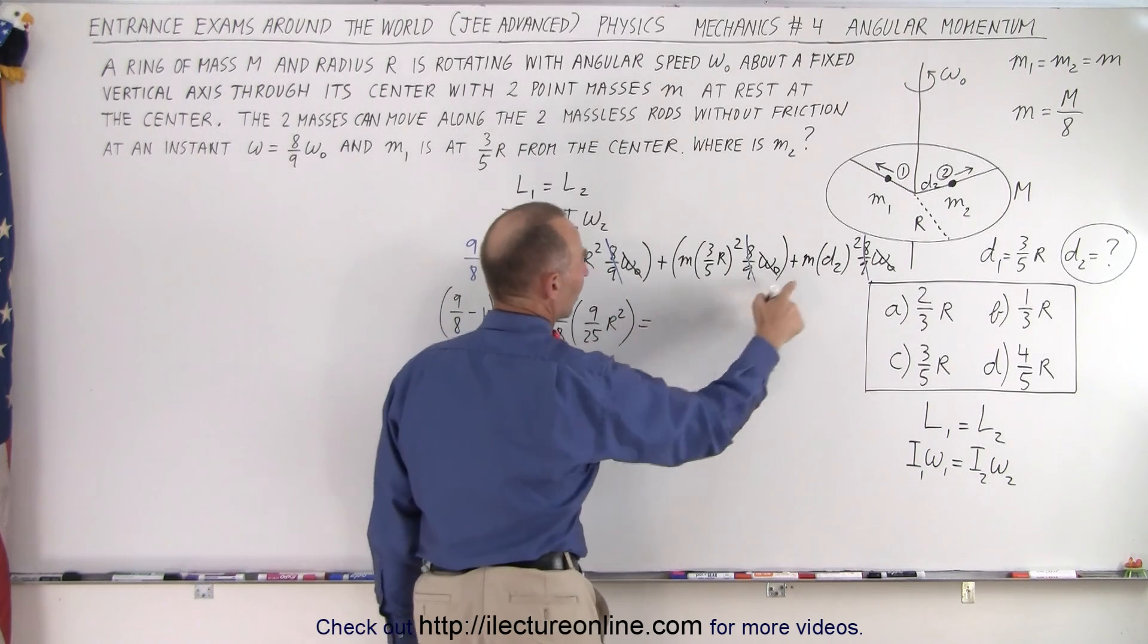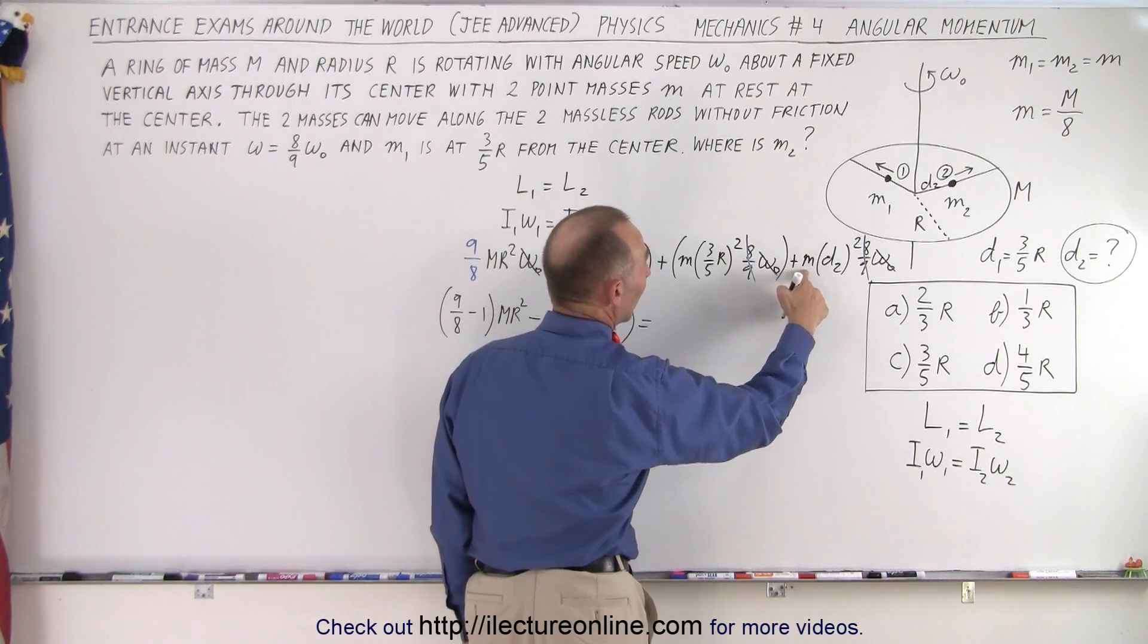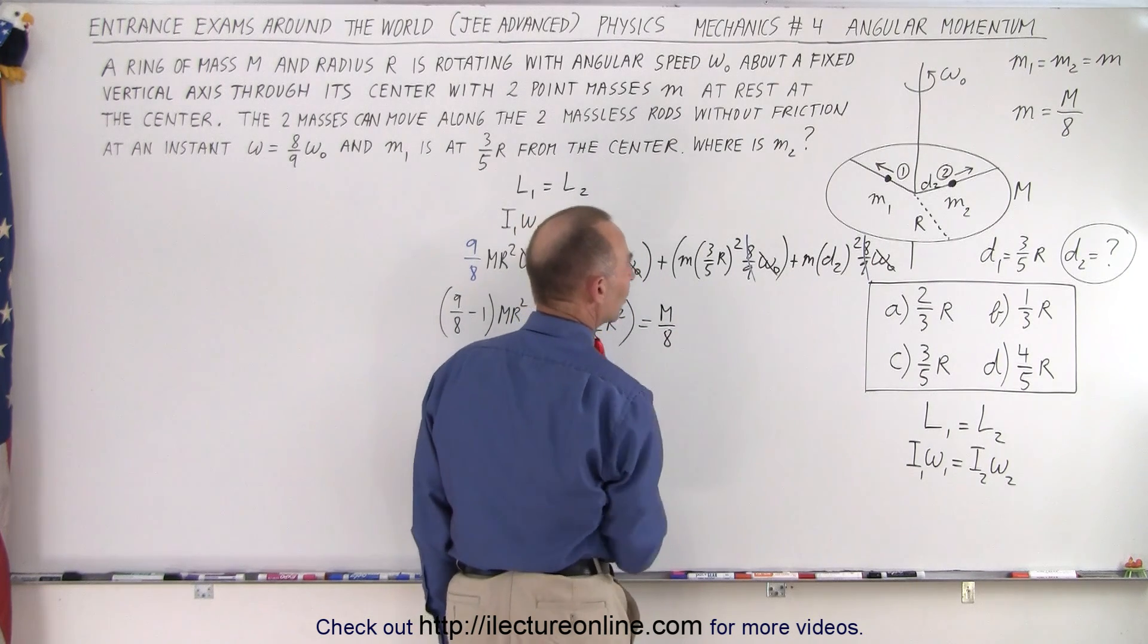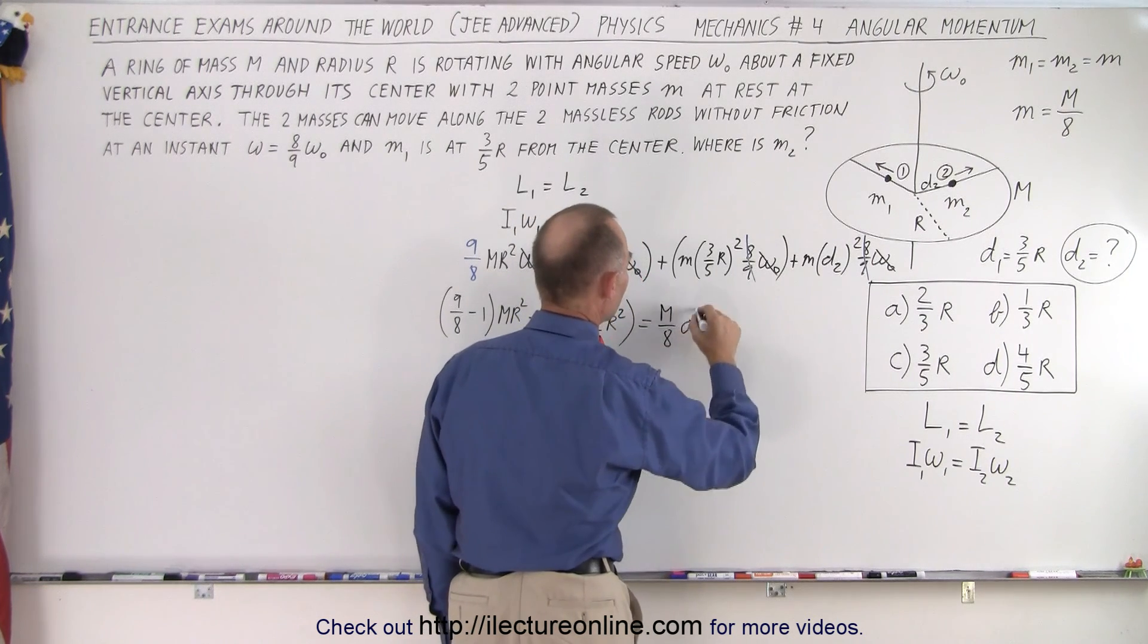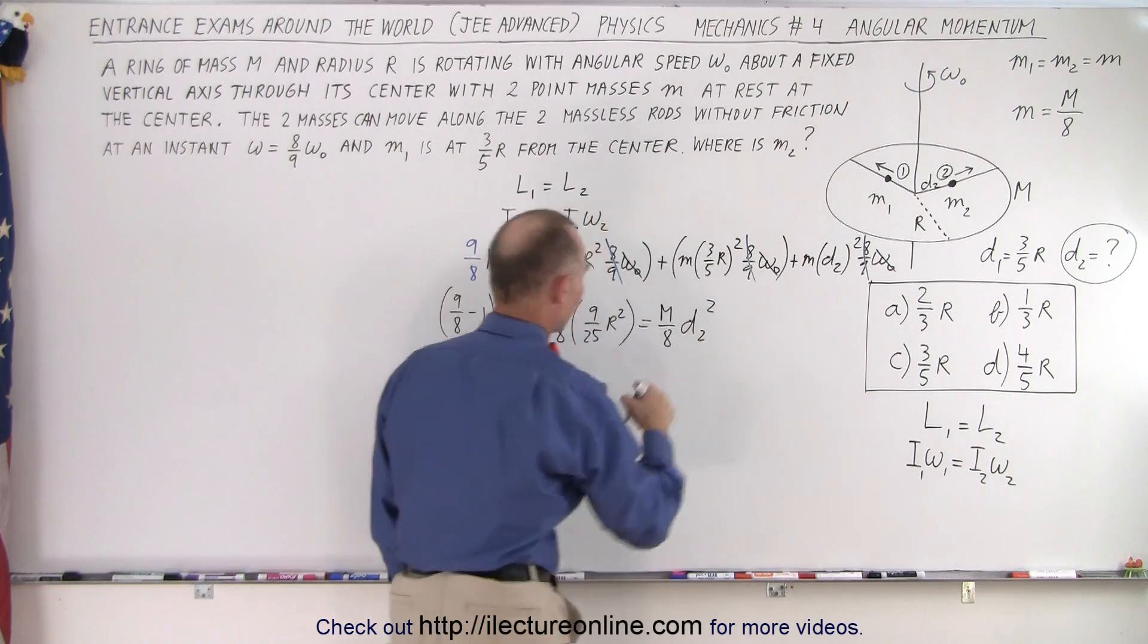Times nine over twenty-five r squared. And that should equal, on the right side, little m is m over eight, m over eight, times d2 squared. And that's what we're looking for.